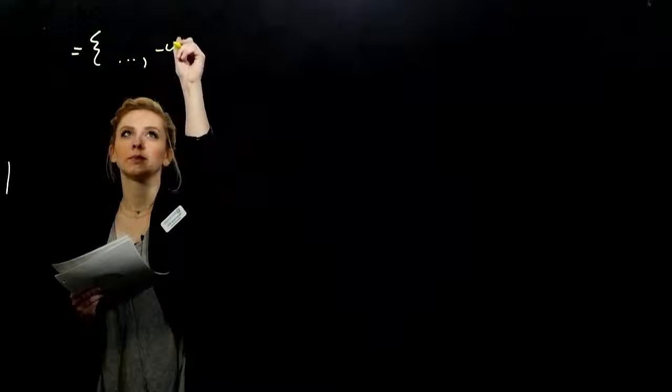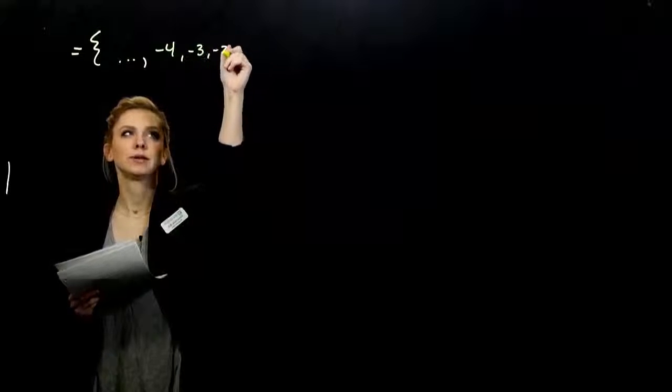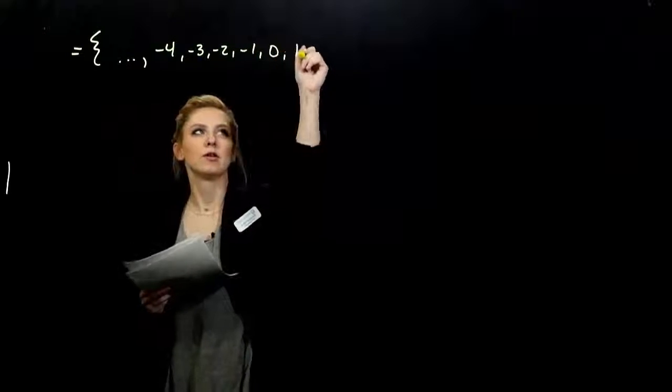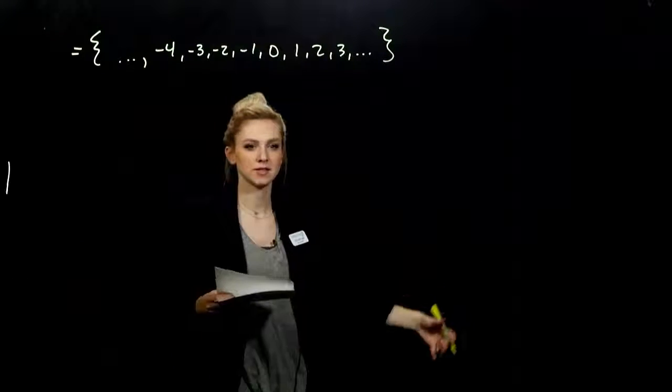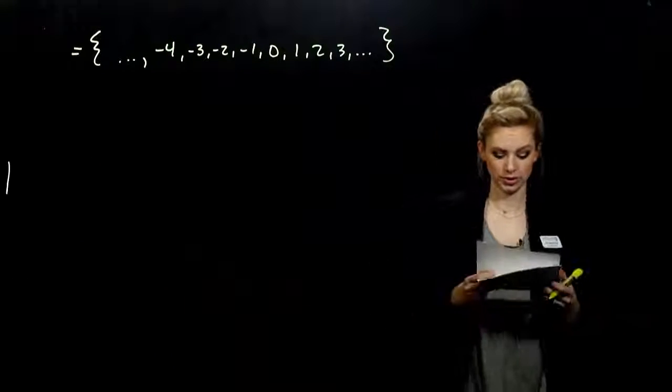So the integers look like minus four, minus three, minus two, zero, positive one, two, three. And the dot, dot, dot again just means continuing on with the same pattern in both directions forever.